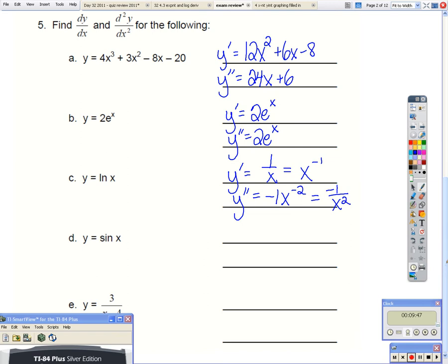Derivative of sine of x. Again, look at your formula sheet, or maybe you have sine of x memorized. Now the derivative of cosine is negative sine of x.